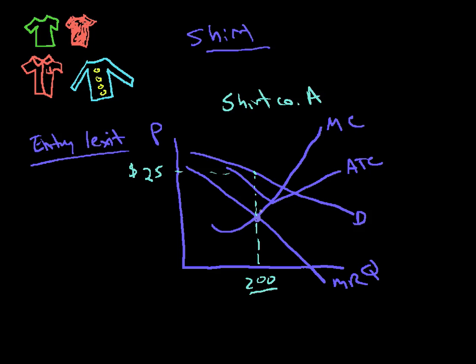This is the quantity here. It's going to cost them as much as it goes up to the average total cost. That's the average cost, this rectangle, and the revenue is 200 times 25. So this is the profits.